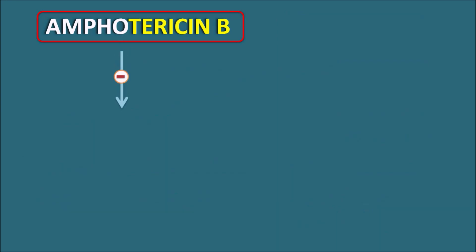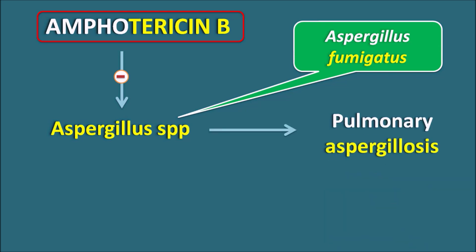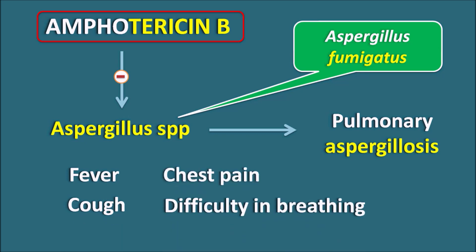This drug is also useful in treating Aspergillus species infections. One pathological organism is Aspergillus fumigatus, which can produce pulmonary aspergillosis. Symptoms related to the pulmonary system include fever, cough, chest pain, and difficulty in breathing.